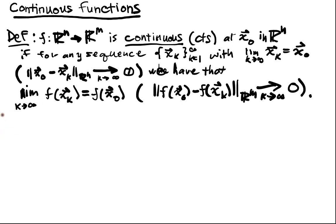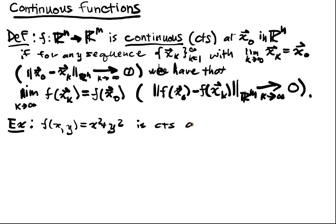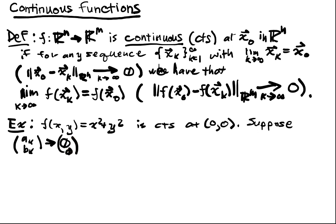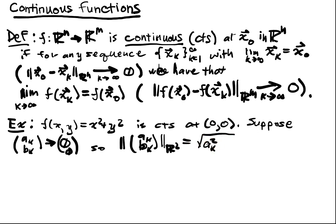Let's get a quick example. Our favorite function f(x, y) = x² + y² is continuous at the point (0, 0). It's continuous everywhere, but it's really easy to show at zero. Suppose we have the sequence of vectors (a_K, b_K) going to (0, 0) as K approaches infinity. That means the distance — the Euclidean length of (a_K, b_K) in R2, which equals √(a_K² + b_K²) — is going to zero as K approaches infinity.